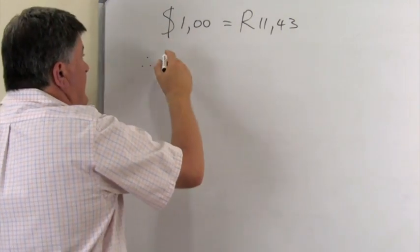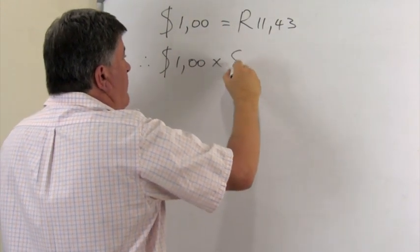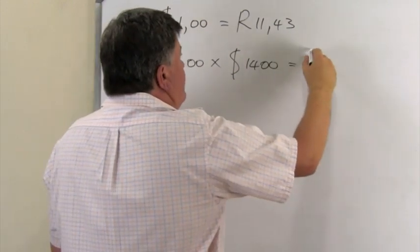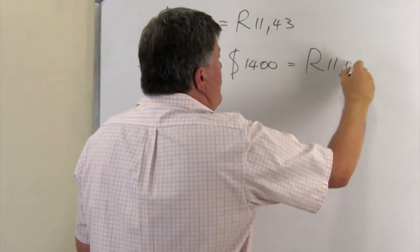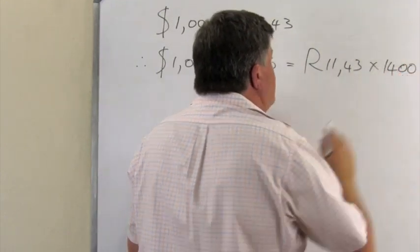So you take the $1, you multiply it by $1,400 and then we do the same with the Rand and we multiply it by 1,400.